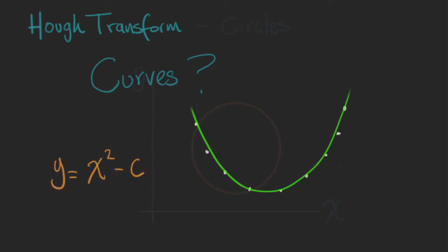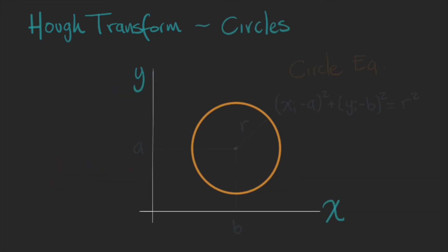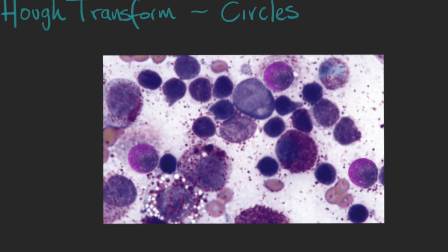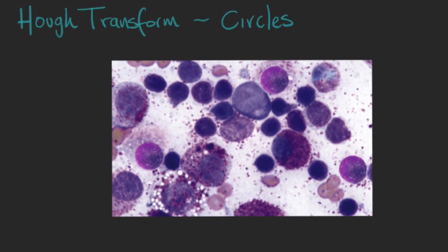So let's see an example for a circle. The circle is defined by points x, y and a radius r. And let's say that we are looking to find a specific type of cell in this image.